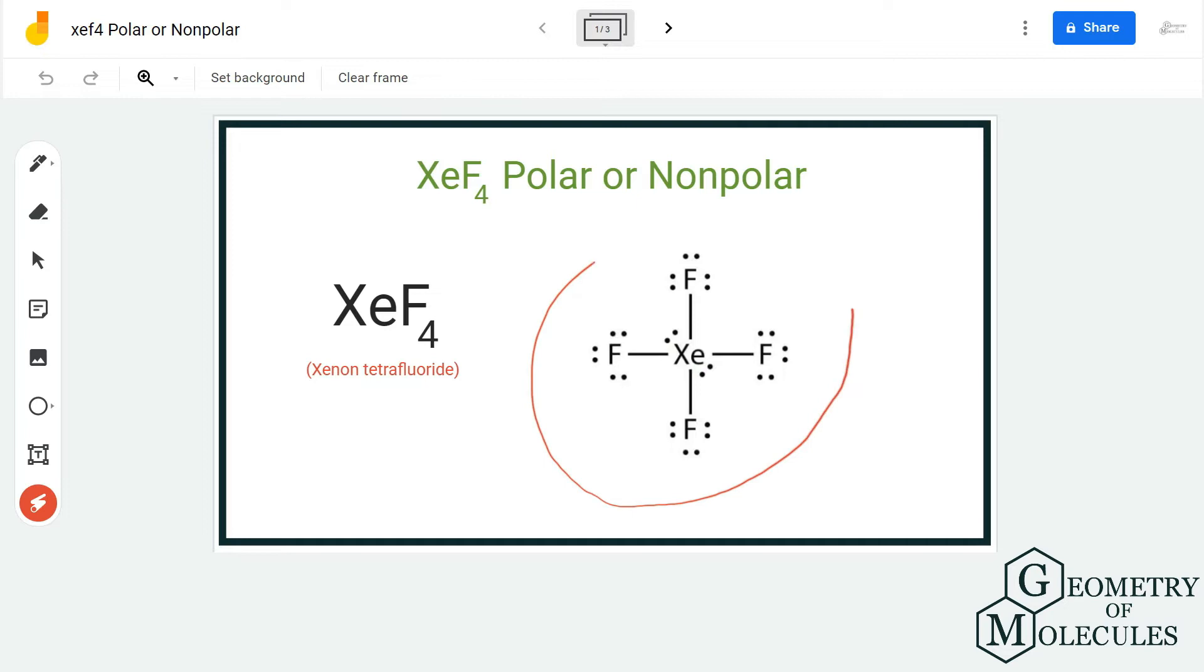This structure is quite symmetrical because all four fluorine atoms are arranged in opposite directions. So even though fluorine is more electronegative than the xenon atom, the electronegativities will cancel out each other due to this symmetry.